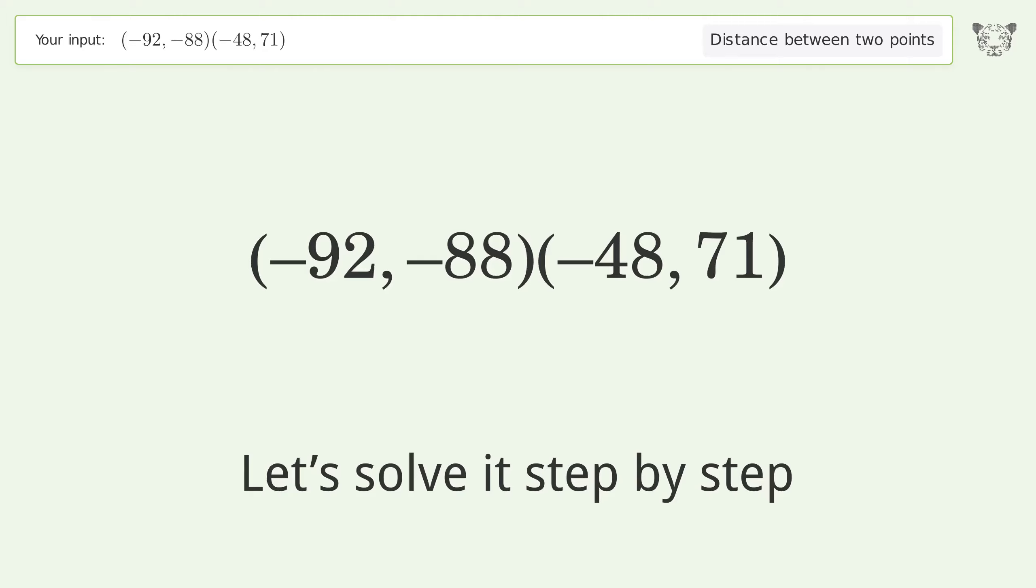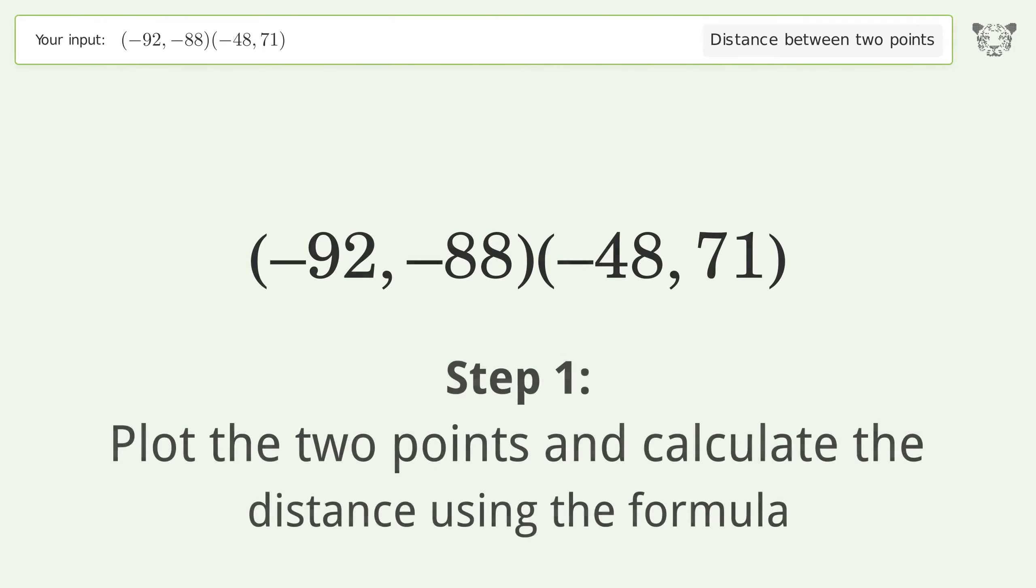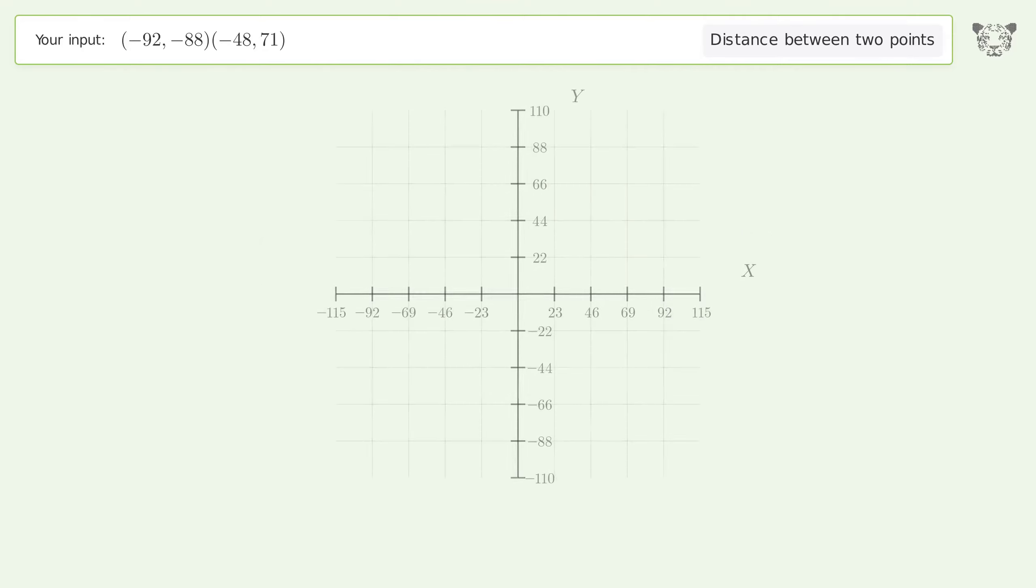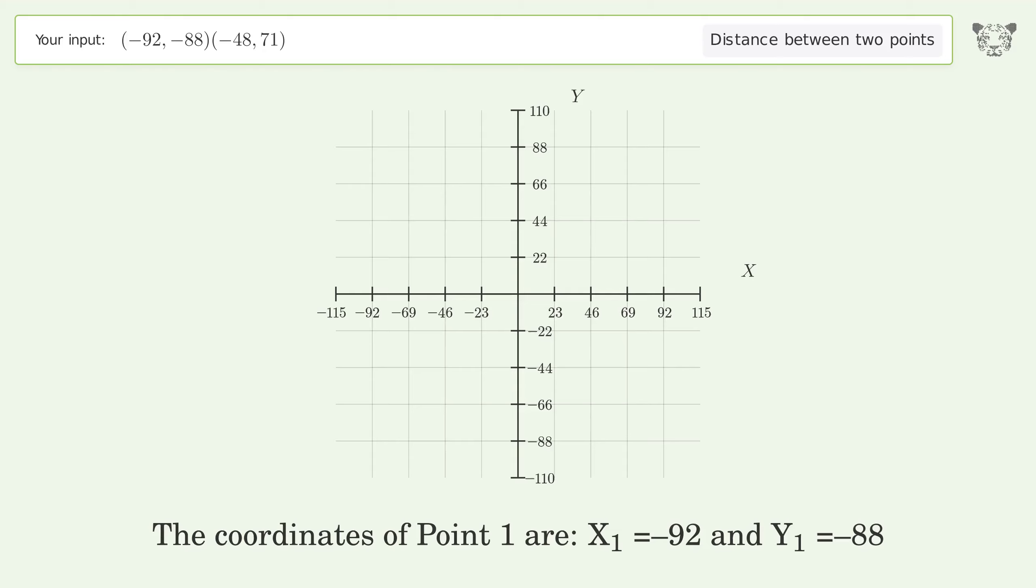Let's solve it step by step. Plot the two points and calculate the distance using the formula. The coordinates of Point 1 are x1 equals negative 92 and y1 equals negative 88. The coordinates of Point 2 are x2 equals negative 48 and y2 equals 71.